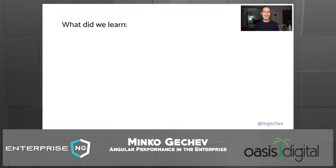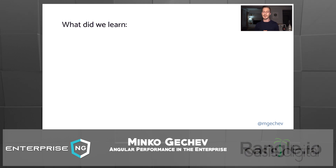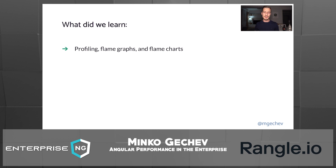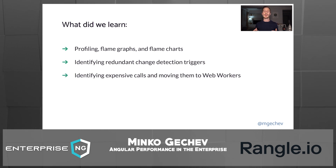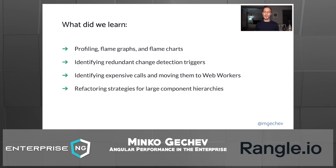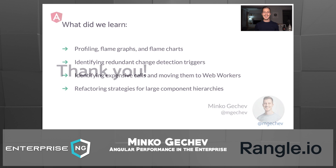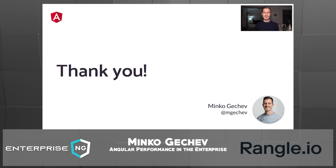That was pretty much everything I had for today. I hope this presentation clarifies what's happening under the hood of your app's runtime and how you can diagnose typical performance issues. We explained three main patterns: identifying redundant change detection triggers, detecting and optimizing expensive calls using web workers, and refactoring applications with large component hierarchies. In the end, we peeked into the JavaScript virtual machine runtime and saw how function calls could be way more expensive before the JavaScript virtual machine compiles them. Thank you very much for watching this video. See you next time and happy coding!